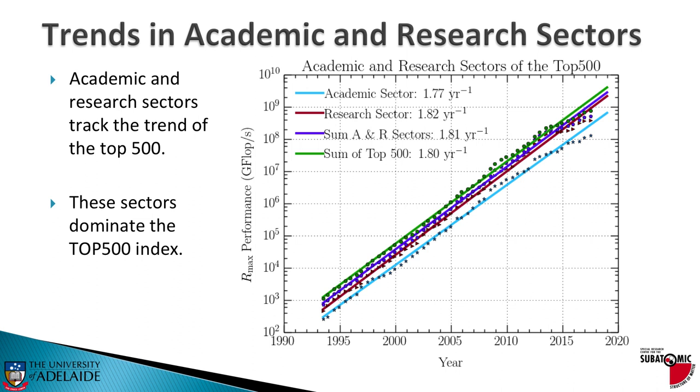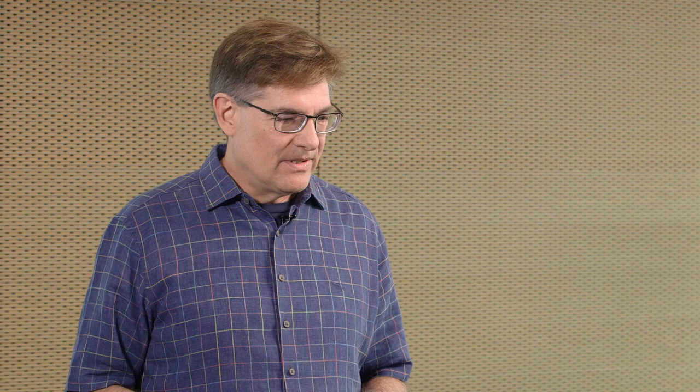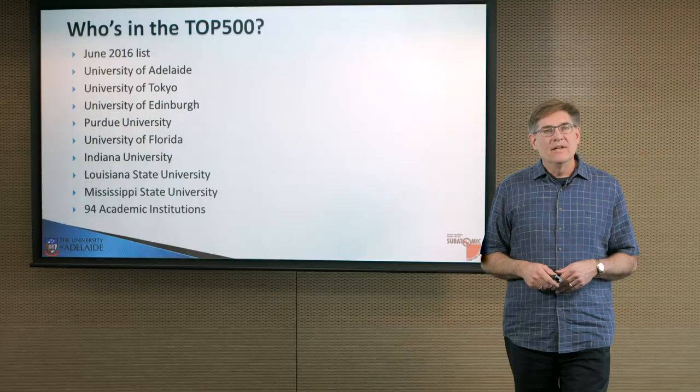So who's in the top 500? When I'm asked, I like to refer back to the June 2016 list. Of course, the reason being, I get to say the University of Adelaide was in it. But we have very good company. You'll find University of Tokyo, Edinburgh, Purdue. Well, there's lots of good company. In fact, there are 94 academic institutions in that top 500 list.